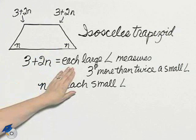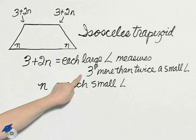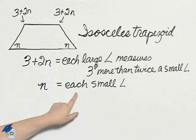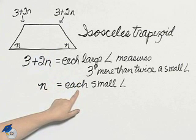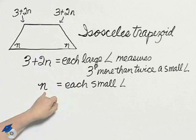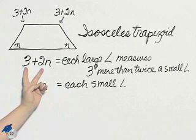Each large angle measures three degrees more than twice a small angle. Each small angle I let be n, so each large angle translates 3 plus 2n.